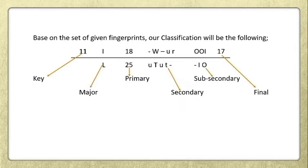Our full classification is as follows: key is 11; major is inner over large; primary is 18 over 25; secondary numerator is dash, capital W, dash, small U, small R; sub-secondary classification has outer and inner for the numerator, and dash, inner, and outer for the denominator; and the final classification is 17.